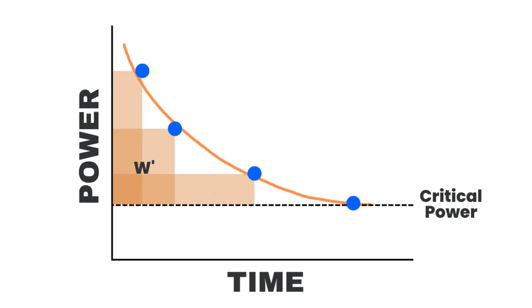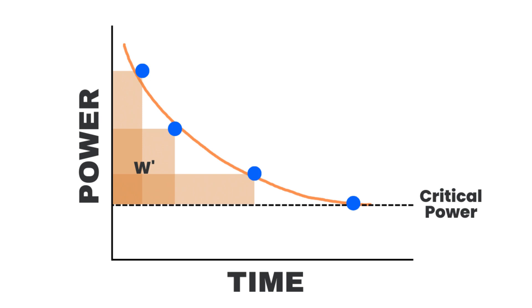Now what that means is that once you get above your critical power, you have a very limited amount of energy that you can expend. And you can expend it really quickly by going really hard, or you can expend it over a longer period of time by going easier. But either way, you've only got the same amount. And if you use it all up, you're going to blow up or have to slow down.